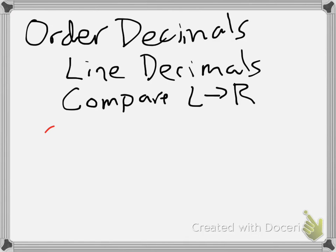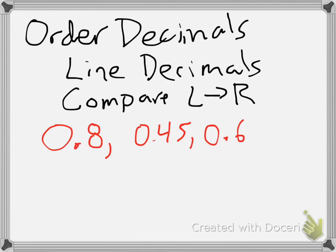So let's take a look at a few decimal numbers here: 0.8, 0.45, 0.675, 0.68, and 0.452.